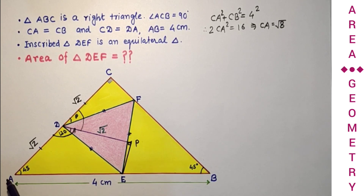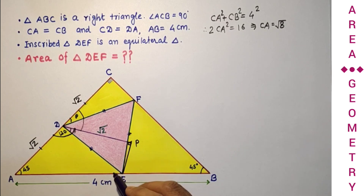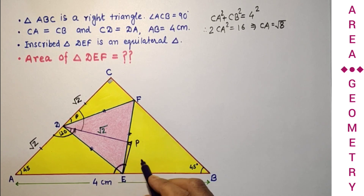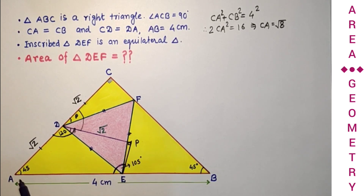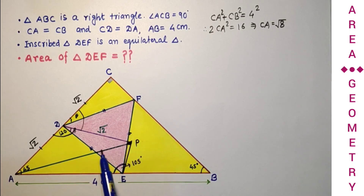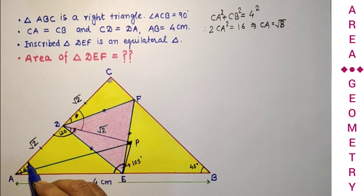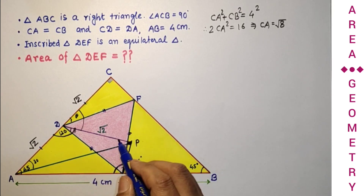In quadrilateral AEPD, the angles are 120°, 45°, and 90°, so the fourth angle is 360° minus the sum of those three, which gives 105°. Now if we join AP, triangle DAP is an isosceles triangle because DA = √2 and DP = √2. The angle at D is 120°, so the two base angles are equal: each is (180° − 120°) / 2 = 30°.